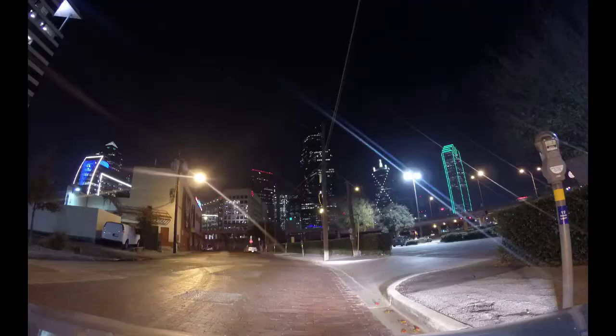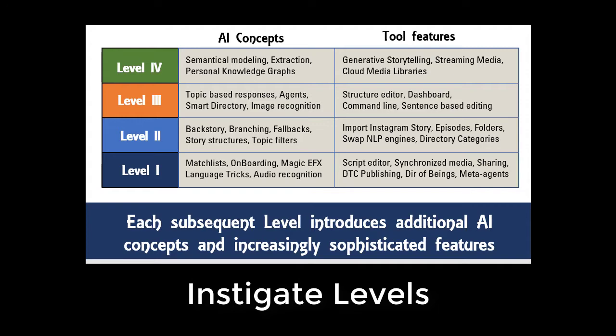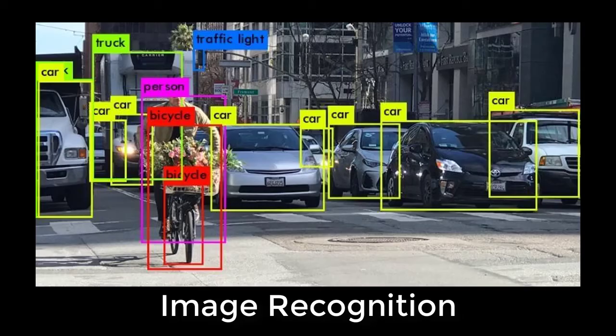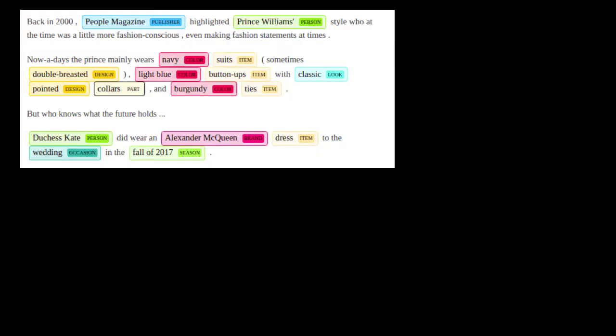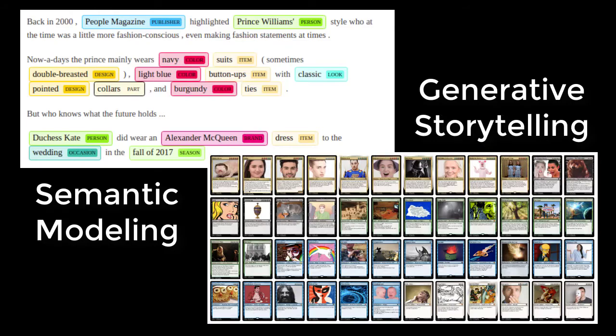Once they've reached level two, Instigate creators can import an entire Instagram story or provide a backstory of their being. With each subsequent level, more and more advanced concepts of AI are introduced. Level three is when image recognition is introduced. Level four brings semantic modeling and generative storytelling.